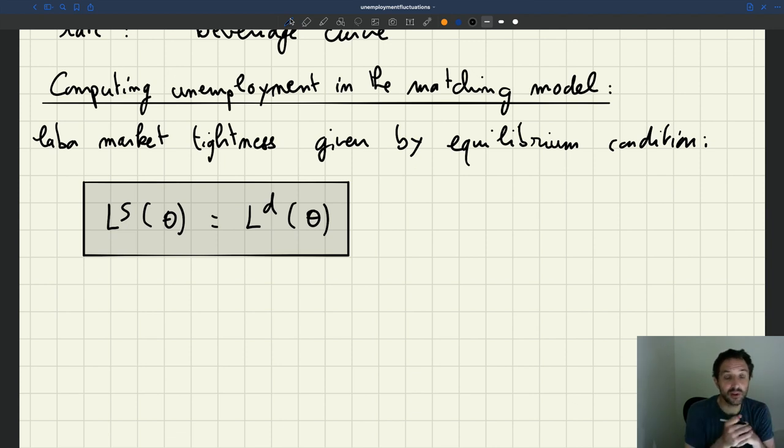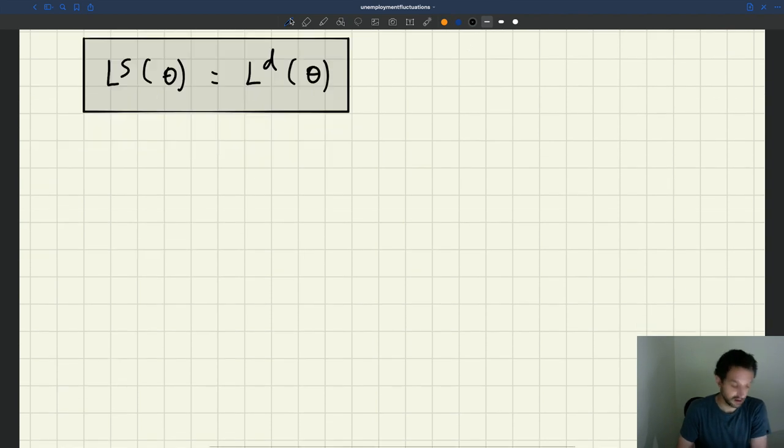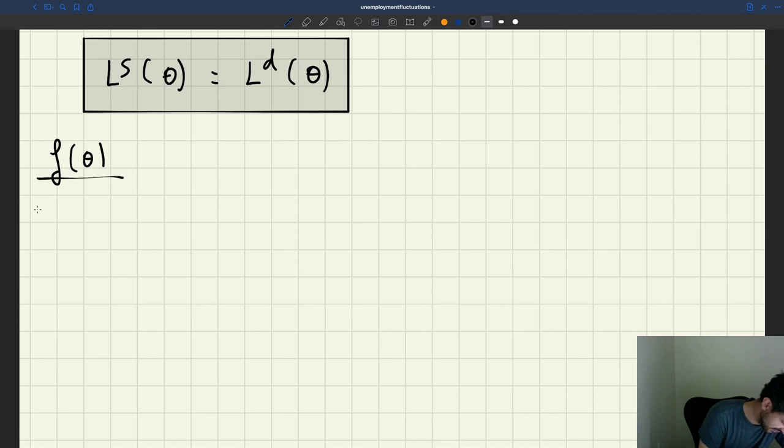So what does that mean? What's the equation that comes out of that? Well, to figure out what's the equation, we have to put in the expression we had seen for supply and demand. So labor supply, if you go back, we know that it's F of theta divided by S plus F of theta times H. We have F of theta. You remember it's a job finding rate. S is a job separation rate. H is the size of the labor force. So that gives us our labor supply. It has to equal the labor demand.